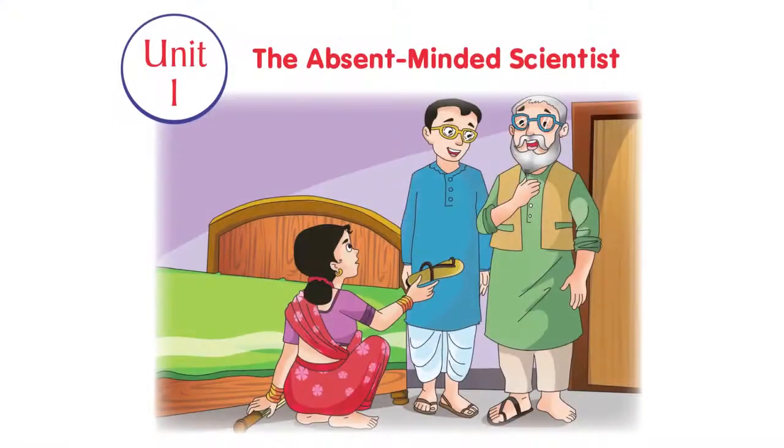The Absent-minded Scientist is a hilarious short story written by Tagore. As the title suggests, it revolves around a brilliant scientist who has a problem with remembering things. He misplaces things, makes a fuss about it and blames others for it. If you haven't read the story already, I'd suggest that you pause the video, go back to your textbook and read the story. Remember, I'm here to facilitate your learning and you have to do your part.